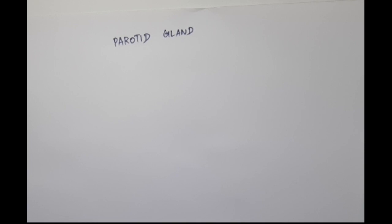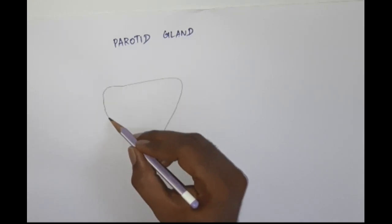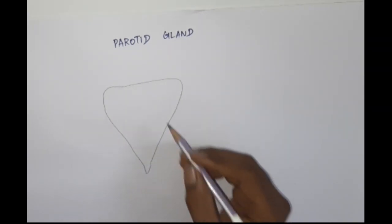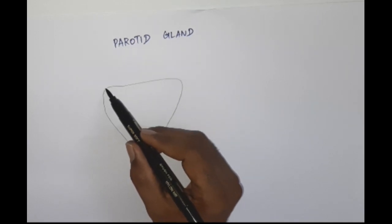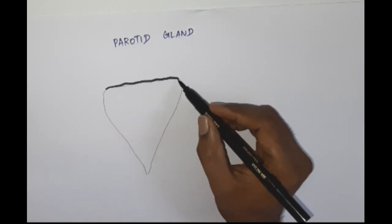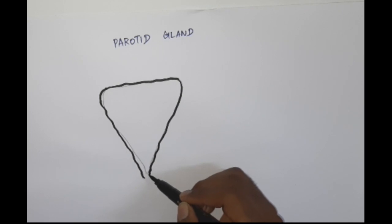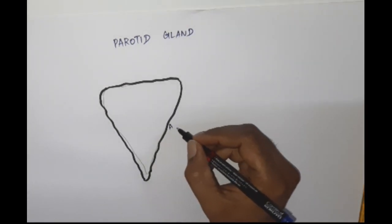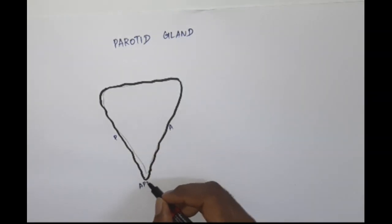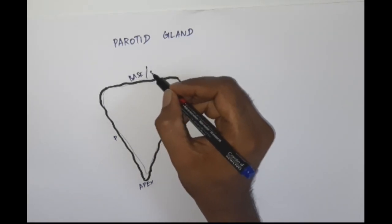It is a pyramidal-shaped structure. We are going to draw a nearly triangular structure representing the gland. This part is the base, this one is the anterior border, this is the posterior border reaching down, and this one is the apex. So to label: this is the anterior border, this is the posterior border, this one is the apex, and this is the base or superior surface.